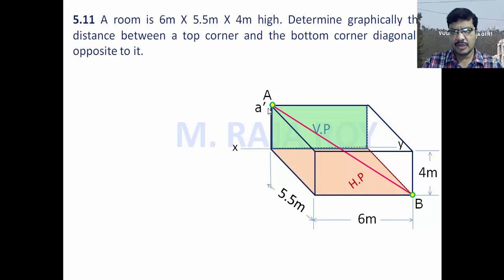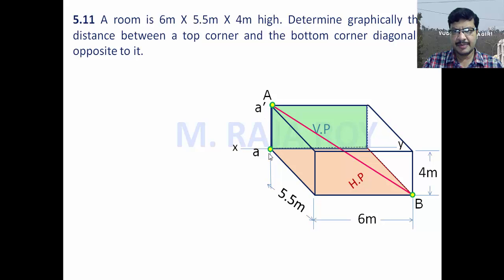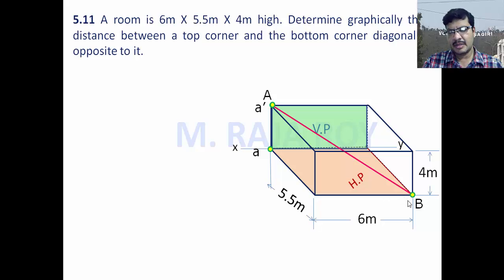Point A is in the VP. Its front view lies somewhere here — that is A dash — at a height of 4 meters from the x-y line. Its top view will lie on the x-y line because the point is in the VP. The distance between the projectors is 6 meters. Point B is in the HP, so its front view will come onto the x-y line as B dash, and its top view comes below.